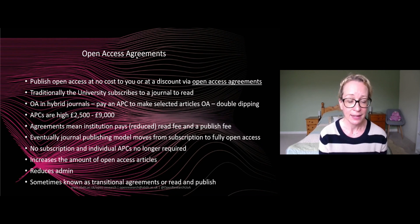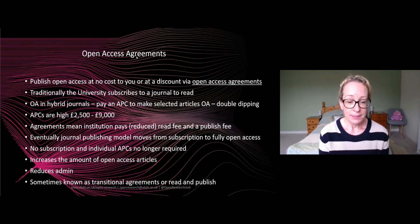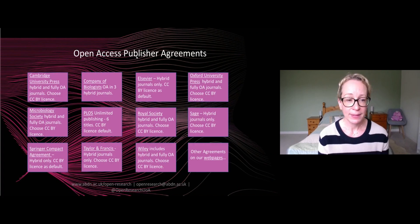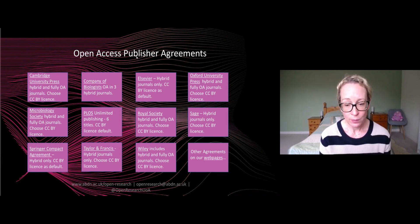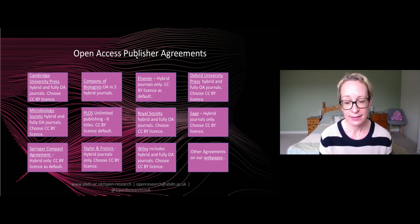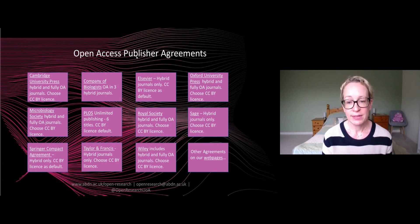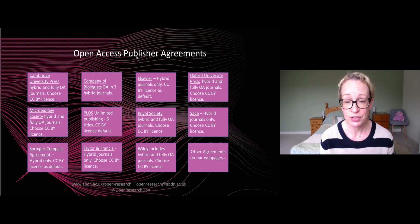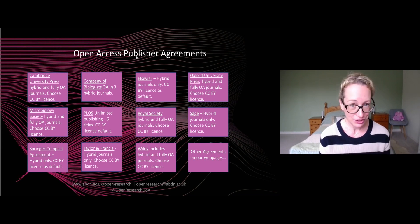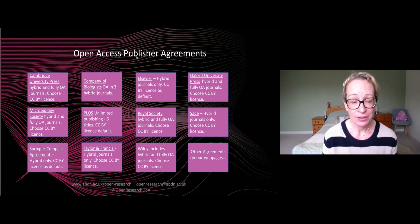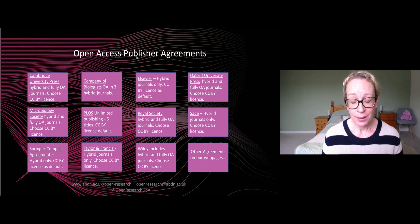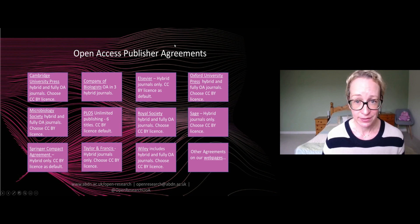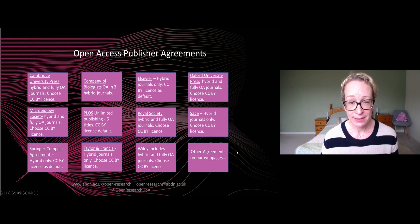These agreements also reduce the admin burden for researchers and the institution. Sometimes known as transitional agreements or read-and-publish, we now have agreements with all of the big publishers. There are slight differences between them — for example, Wiley includes both hybrid and fully open access titles, whereas Elsevier only covers hybrid journals. So if you want to publish in a fully open access journal from Elsevier, there will still be an article processing charge. Check that your article is covered by the agreement; if it isn't and you need to pay a fee, make sure you have funding available from your school or block grants before you commit to publish.